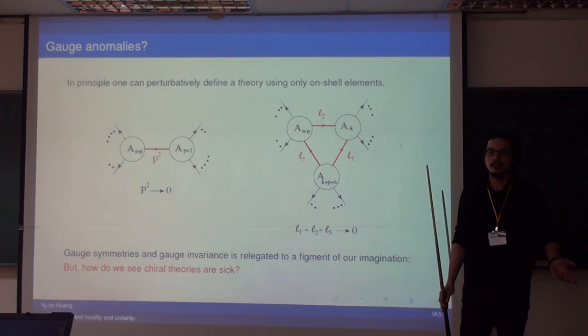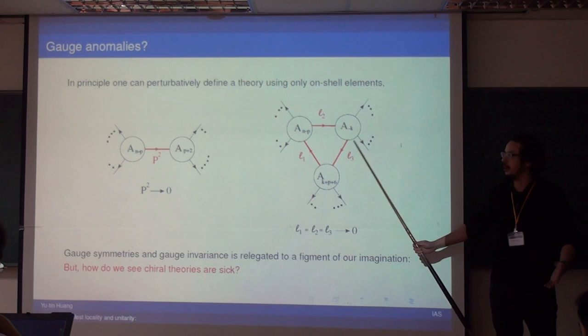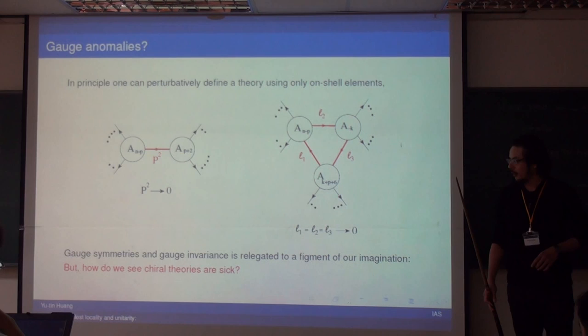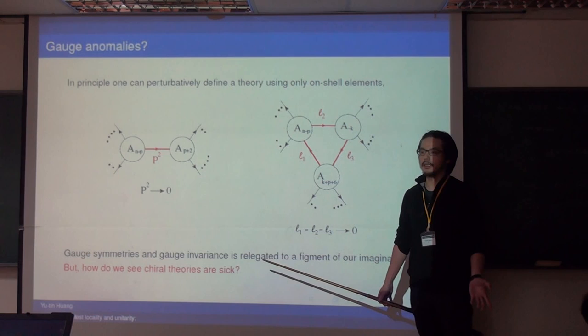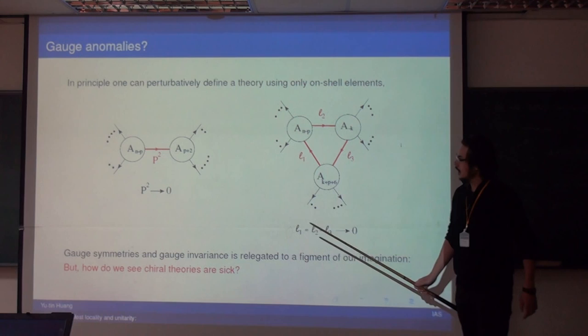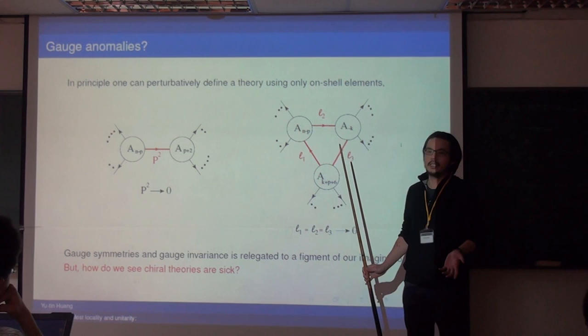If we manage to do this, then essentially gauge symmetry never brought us anything — it's really been relegated to a figment of our imagination. It doesn't appear in this entire process and has no relevance. The first thing one may ask is: what is a gauge anomaly then? How do we know a chiral theory is sick? This will be the topic of the talk, because everything feeding in here is gauge-invariant — there's nothing to vary.